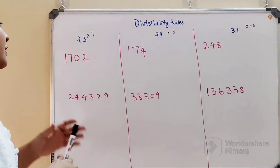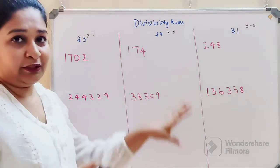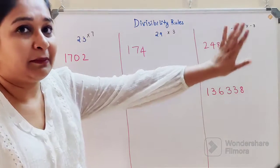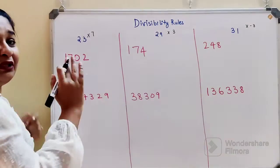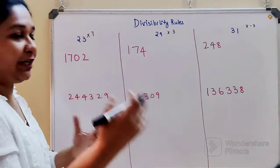Basically what you do is multiply these numbers with only the last digit of your question. So here you have 1702. This 2 gets multiplied by 7.